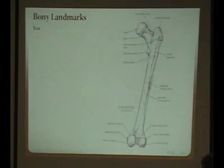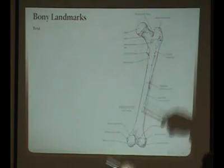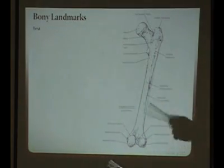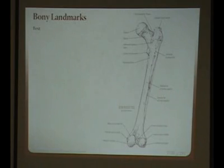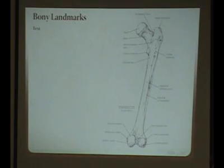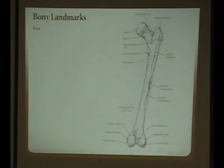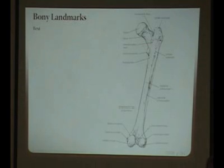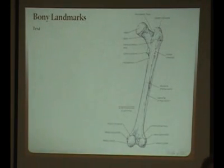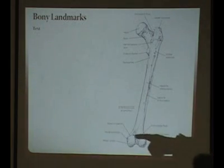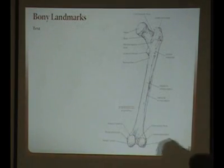Here's the linea aspera — is this the posterior or the anterior side of the femur? You're not really likely to be able to palpate that on somebody, but you can palpate the greater trochanter for sure, maybe the lesser trochanter, and definitely the epicondyles and the adductor tubercle.